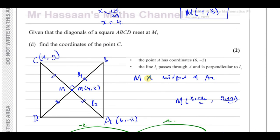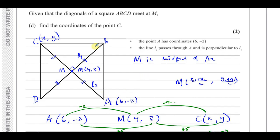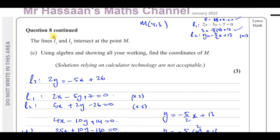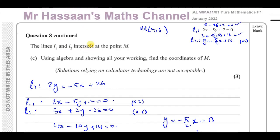That's the answer to part D, using the fact that the diagonals of a square bisect each other, so M is the midpoint of AC. That concludes question number 8. Other questions from this paper and straight line graph questions from P1 can be found in the playlists shown at the end of the video. Thank you for watching and see you soon.